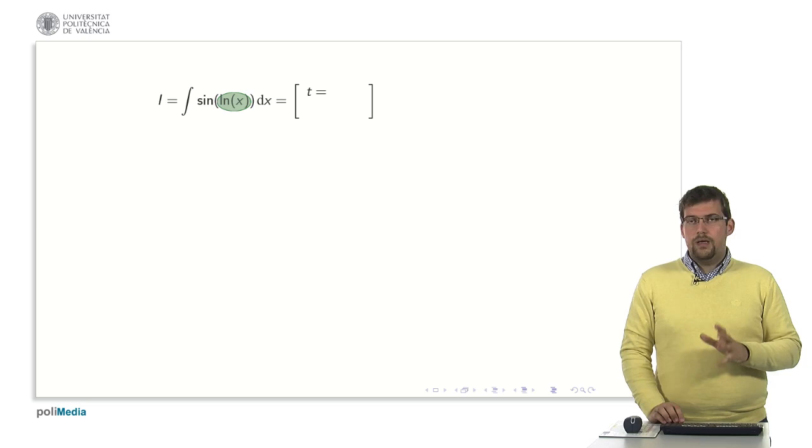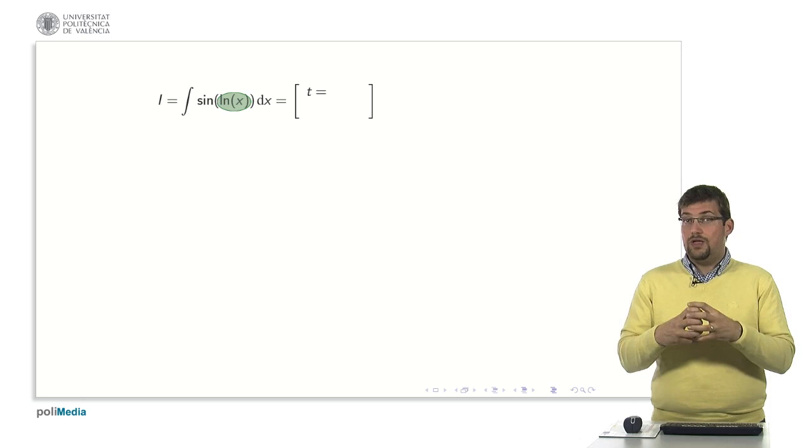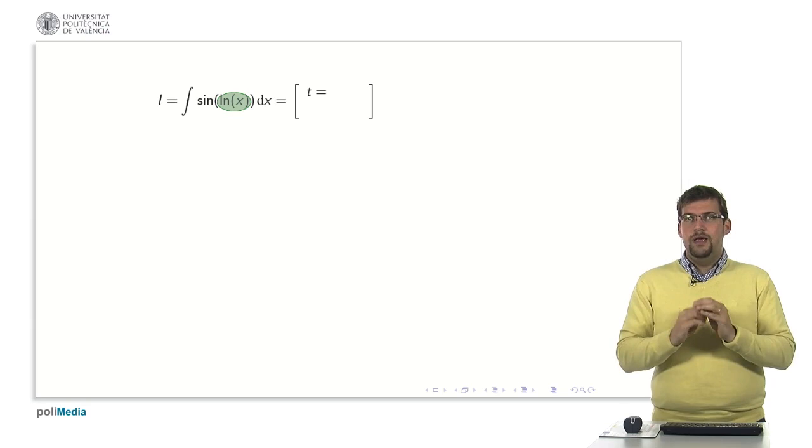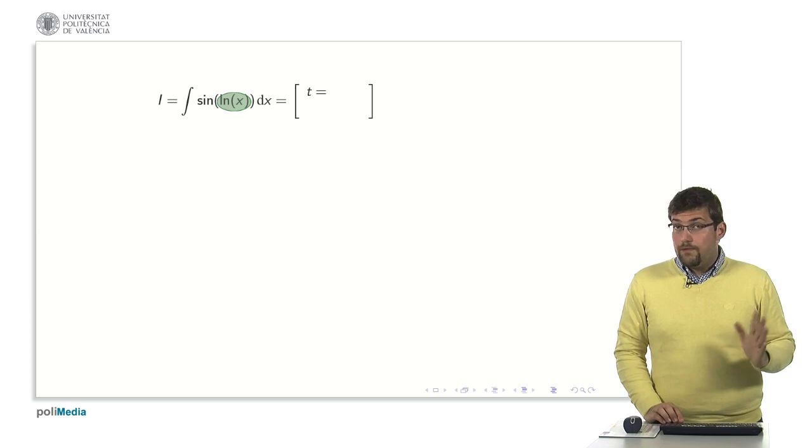Firstly we have the sine function which stands on the outer side and secondly we have the logarithmic term. Whenever possible we aim to perform a change of variable on the innermost part, the part that effectively includes the variable. The sine function does not contain the variable rather it's the logarithm that encompasses the variable.